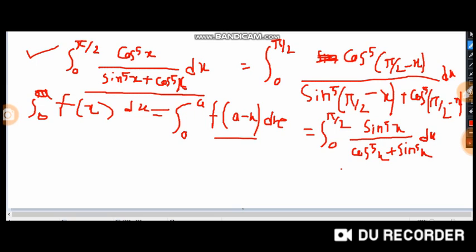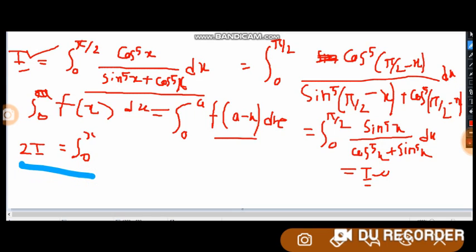We take it as I. So here I equals 0 to π/2, sin^5(x) divided by cos^5(x) plus sin^5(x) dx. And in the beginning, I was 0 to π/2, cos^5(x) divided by sin^5(x) plus cos^5(x). When we add this, 2I, we get 2I equals 0 to π/2, cos^5(x) plus sin^5(x) divided by sin^5(x) plus cos^5(x).